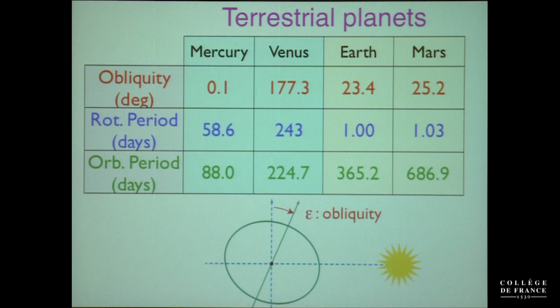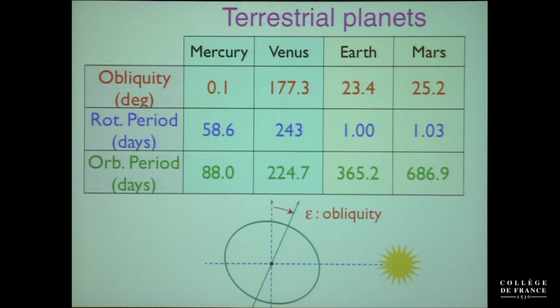You have Mercury and Venus on one side, and on the other side the Earth and Mars. The Earth and Mars rotate in about one day and have an obliquity of about 23 degrees. Mercury and Venus have a very slow rotation period and an obliquity of either zero or 180 degrees — a vertical axis — which are both signs of being tidally evolved.